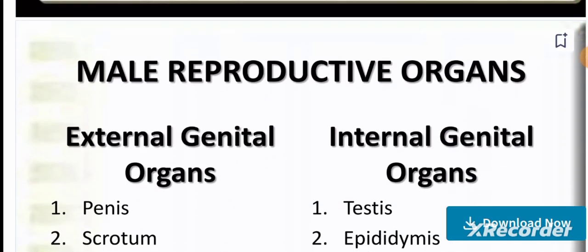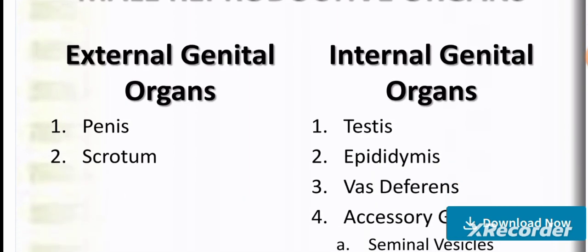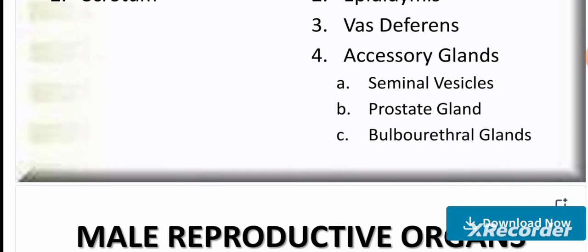Male reproductive organs are classified as external or internal genital organs. External genital organs include the penis and scrotum. Internal genital organs include the testes, epididymis, and vas deferens. Accessory glands include the seminal vesicles and prostate gland.